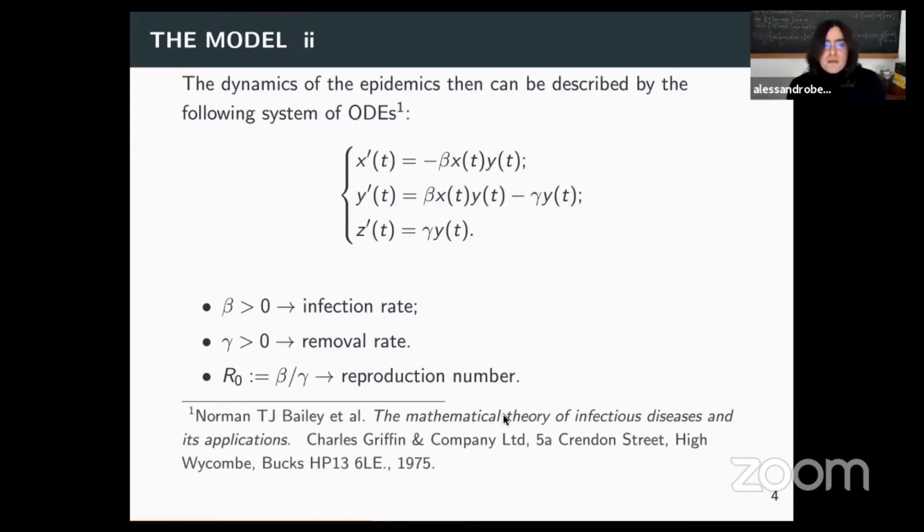In this simplest formulation, SIR model is defined through a system of three ordinary differential equations, which basically tells how each of the variables changes over time. Once you give initial conditions, the dynamic of the system is completely specified by the values of beta and of gamma, which are the infection rate and removal rate. And it's also convenient to define this reproduction number, which is in this case, R_naught, is the ratio between beta and gamma.